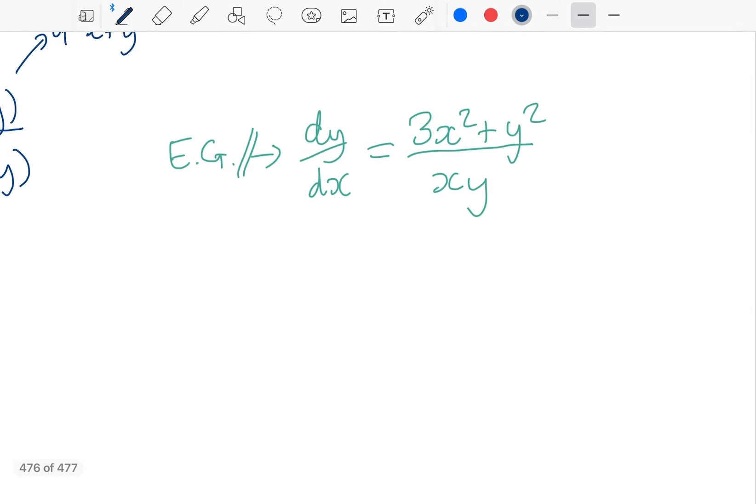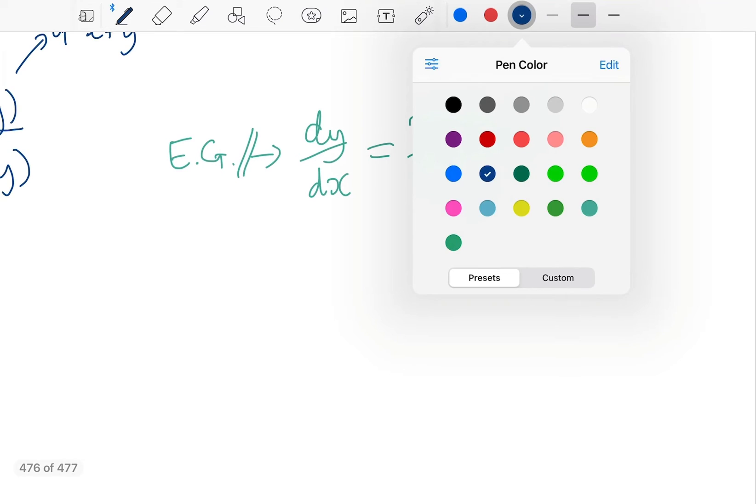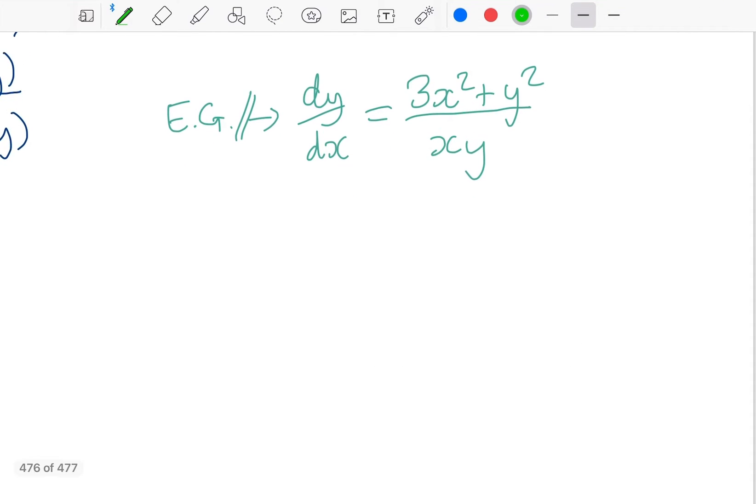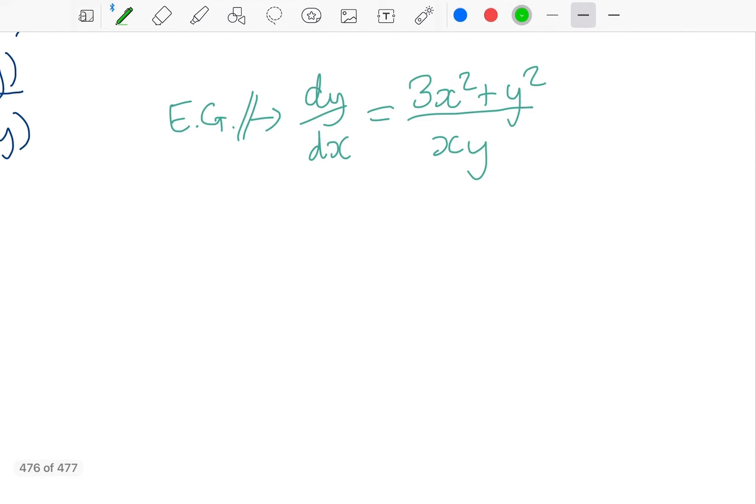So a couple of examples quickly. So firstly this one here dy by dx equals 3x squared plus y squared over xy and as we said these all these terms have a combined degree of 2. So first step we'll be dividing by x to the power of 2 every single term. That will become 3, this will become y over x all squared, this will become y over x.